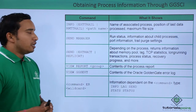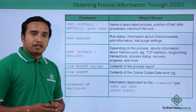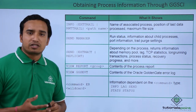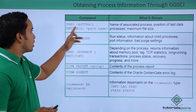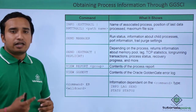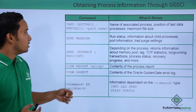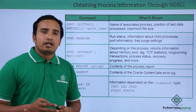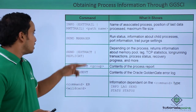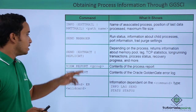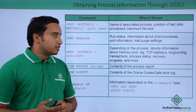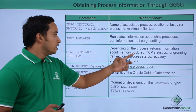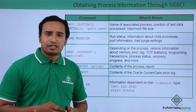Another command is INFO EXTTRAIL. If there is any trail file for which you want to know the information, you can give INFO EXTTRAIL and the trail file name. SEND MANAGER lets you send and retrieve run status information about child processes, port information, and trail purge settings. SEND EXTRACT and SEND REPLICAT are other commands that return information about memory pool, lag, and TCP statistics.